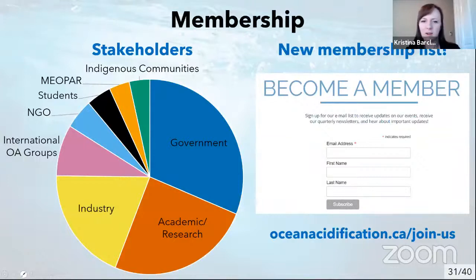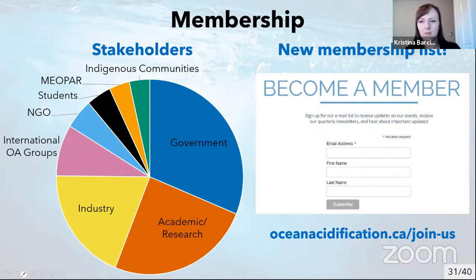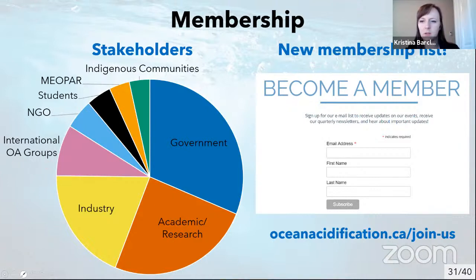People might be interested in our membership breakdown. By email affiliation, it's mostly government, academics, and industry folks, but we also have a large contribution from international ocean acidification groups — a lot of people from the US and beyond — as well as NGOs, students, MEOPAR members, and indigenous community leaders from both Canada and the US. We've added a form to our website where you can add yourself at oceanacidification.ca/join-us. This has been great — about 40–45 people have added themselves that we didn't previously know about.